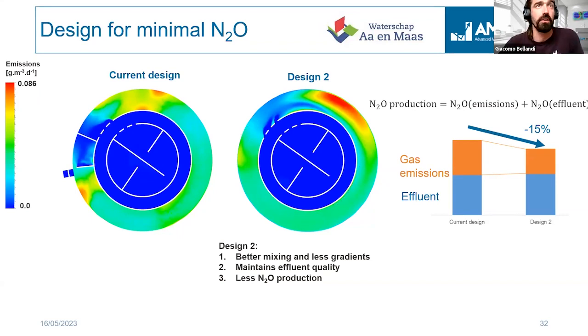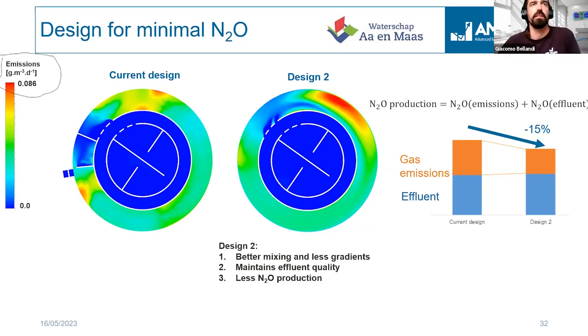What you see in the color scale are emissions of N2O — specifically the rate, or speed, of emissions.